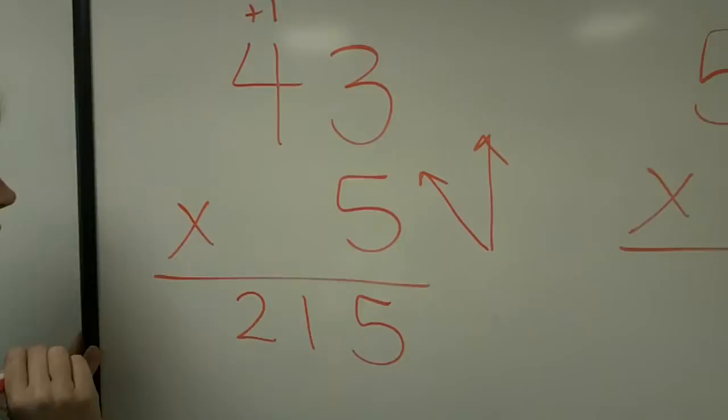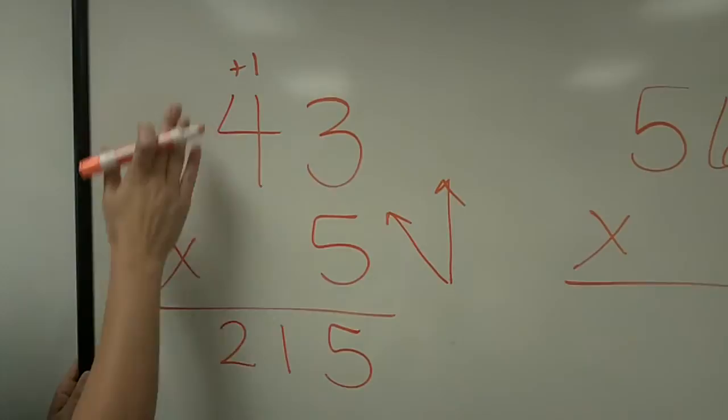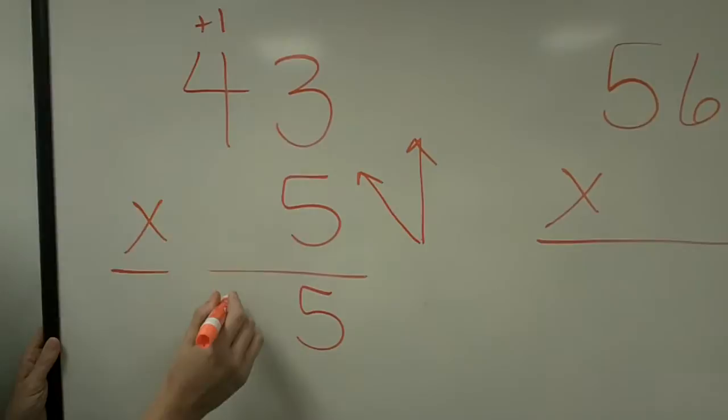The reason we do that is we actually are regrouping, even though we don't show that. Let me show you what I mean. 5 times 4 is 20, plus 1 is 1. So you would put the 1 here, and you would regroup the 2.